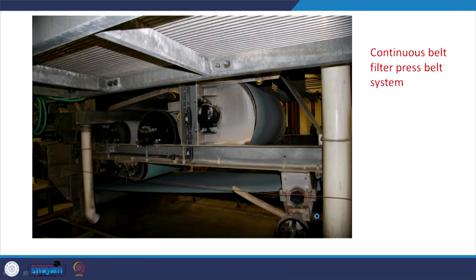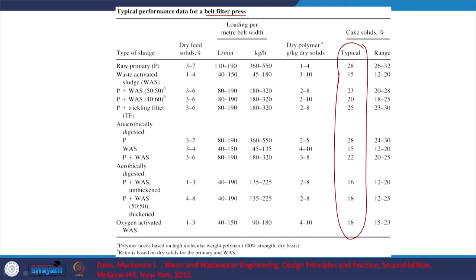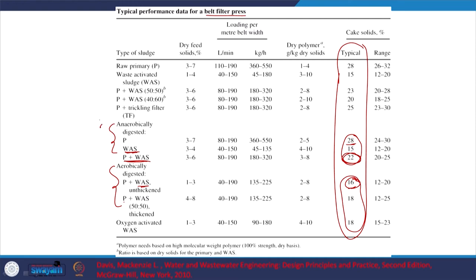Looking at belt filter press performance — the key aspect is solids concentration. For anaerobically digested versus aerobically digested sludge, and waste activated sludge, it is easier to dewater anaerobically digested sludge than aerobically digested. Comparing primary sludge plus WAS — P plus WAS gives around 16% solids. That is something to keep in mind when choosing the kind of stabilization.